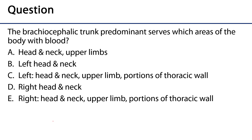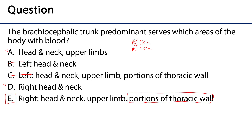The assessment question: the brachiocephalic trunk predominantly serves which areas of the body with blood? Option: head and neck and upper limbs — that sounds reasonable. Option: left head and neck — no, because the brachiocephalic trunk supplies the right subclavian and right common carotid arteries, so anything with 'left' is out. The correct answer is: right head and neck, upper limb, and portions of the thoracic wall. We know this because the first part of the subclavian artery gives off the internal thoracic artery, supplying the thoracic and even portions of the abdominal wall.